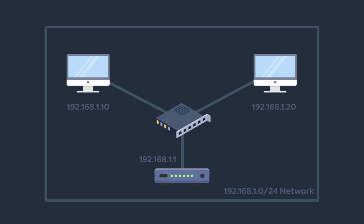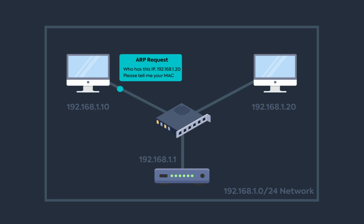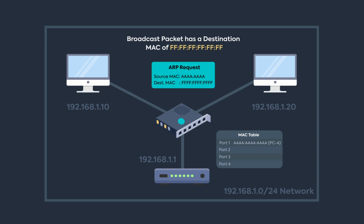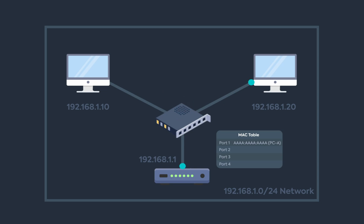How would a packet be transferred if PCA tries to ping PCB for the first time? Since PCA is pinging PCB, it already knows its IP address, but it doesn't know the MAC address. So it first looks up PCB's MAC address in the ARP cache. If there's no record, PCA sends out an ARP request. The switch receives the ARP packet, adds PCA's MAC address to its own MAC table, then checks where the packet should be sent. Seeing the destination MAC is the broadcast address, it knows the packet is a broadcast and sends it out to all nodes.